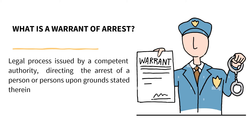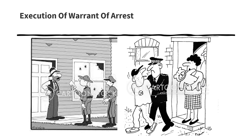A warrant of arrest is a legal process issued by a competent authority directing the arrest of a person or persons upon grounds stated therein. The head of the office to whom the warrant was delivered must cause it to be executed within 10 days from its receipt, and the officer to whom it is assigned must make a report to the judge who issued the warrant within 10 days from the expiration of the period. If he fails to execute it, he should state the reasons therefore. A warrant of arrest is valid until the arrest is effected or the warrant is lifted — there is no limitation of period.